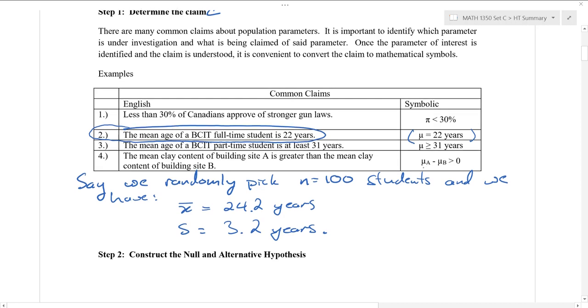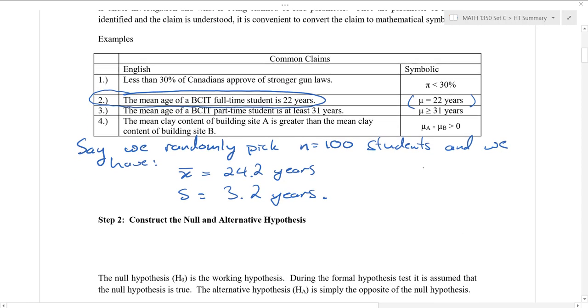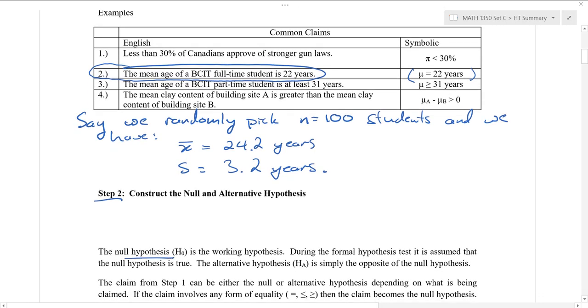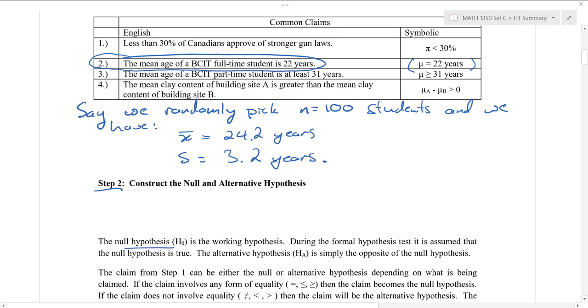So that's step one. We've established our claim. For step two, let's construct the null and alternative hypothesis. So let's go ahead and think about what this is. The null hypothesis, or working hypothesis, is something in terms of equality that we're going to assume is true for the example. So here, we can take H0, our null hypothesis, to be mu equals 22 in years. That's our null hypothesis H0.